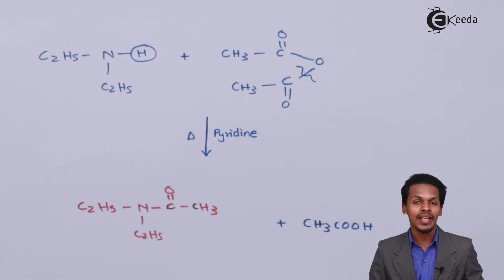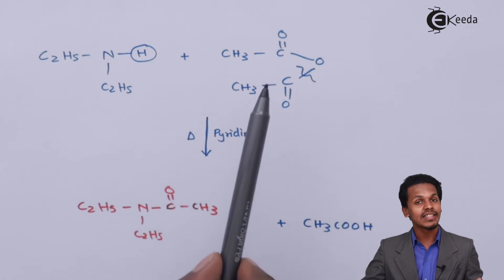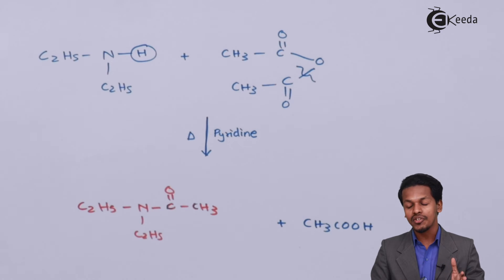So this is how we can prepare a product. But what about the reaction of tertiary amine with acetic anhydride? There will be no reaction because there is no hydrogen available for tertiary amine, and that's why the reaction will not proceed. This reaction is limited to primary and secondary amines only.